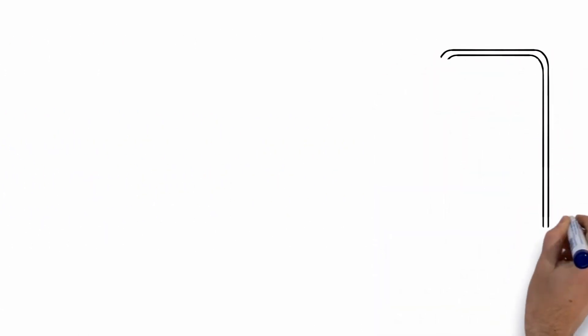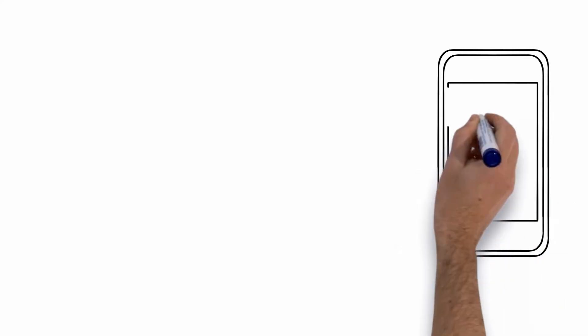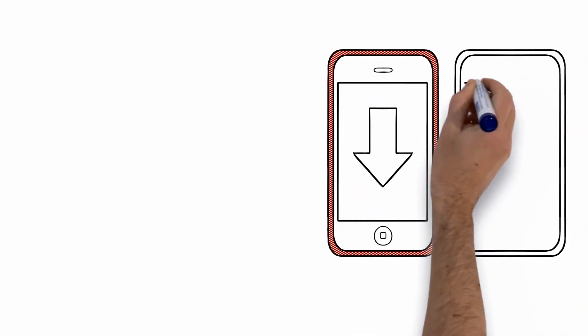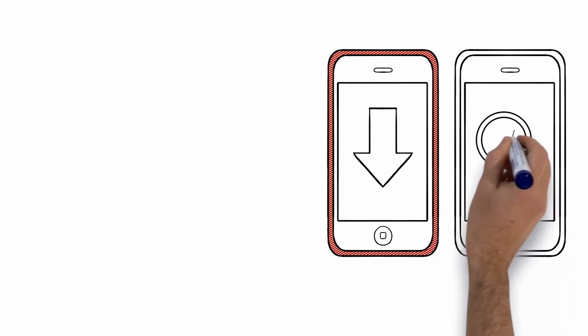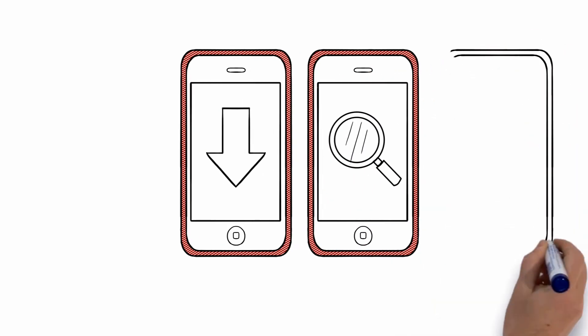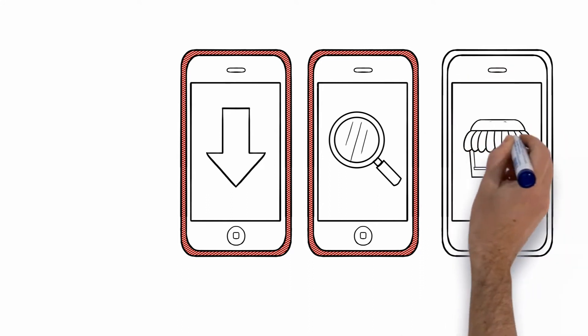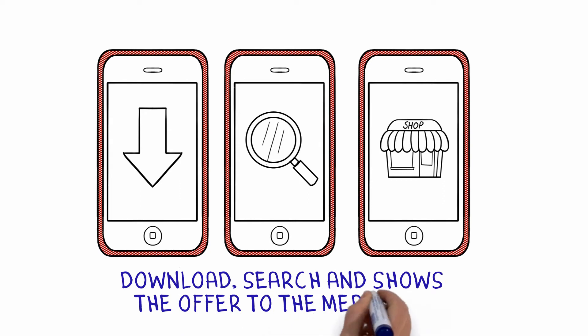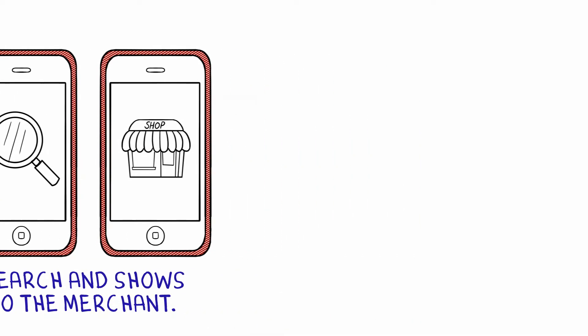Here's how it works. The consumer simply downloads the My TMC app on their smartphone for free. The consumer taps on the My TMC icon to search or scan through our partner merchant list by category. Once they find the merchant they're looking for, they tap on the merchant's icon to view the merchant's offer. The consumer shows the offer to the merchant at the time of purchase, and the deal is theirs.